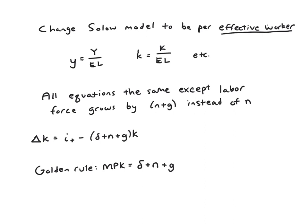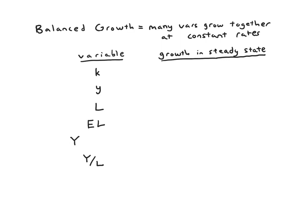So there's one last thing to talk about, because we said the mechanics of the model don't really change, but the interpretation of the model changes. The whole point of doing this adaptation was to allow output per worker to grow in the steady state. So let's talk about growth in the steady state. It sounds kind of like that doesn't even make sense as a concept. So we want to introduce this term, balanced growth.